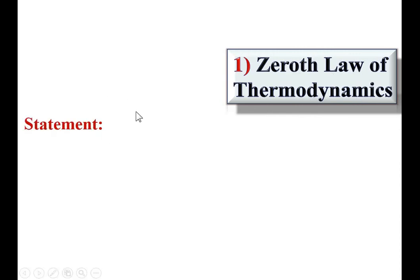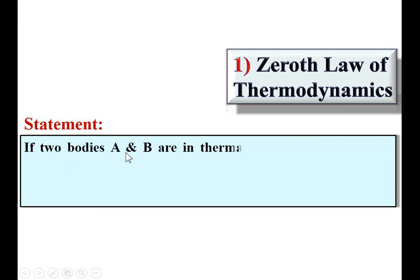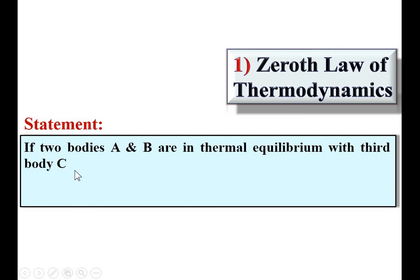First, the statement of the zeroth law of thermodynamics: if two bodies A and B are in thermal equilibrium with a third body C — up to here this is the condition. There are two bodies A and B, and both are in thermal equilibrium with body C. Try to understand this condition with the help of a figure.